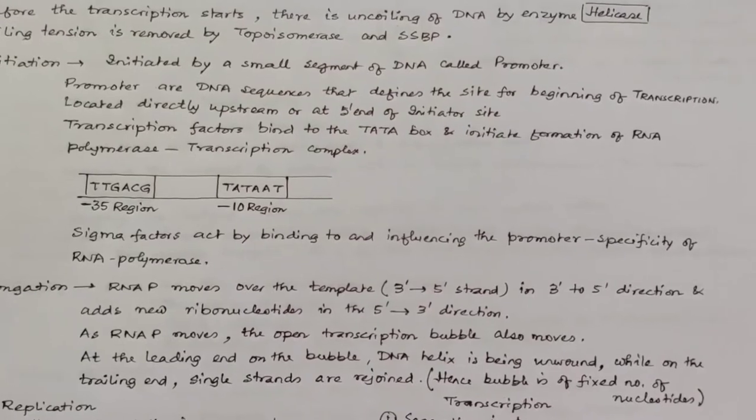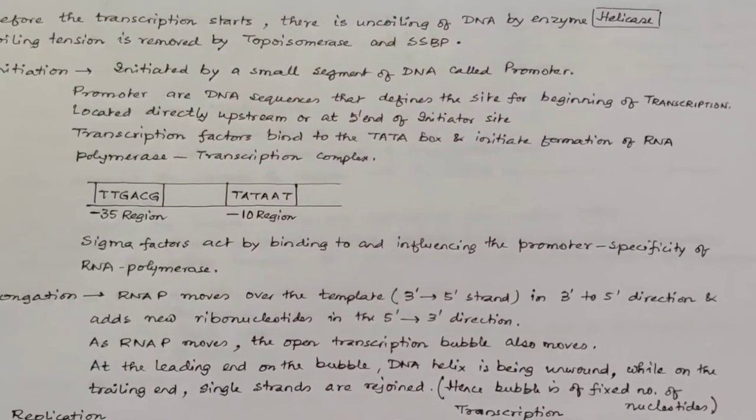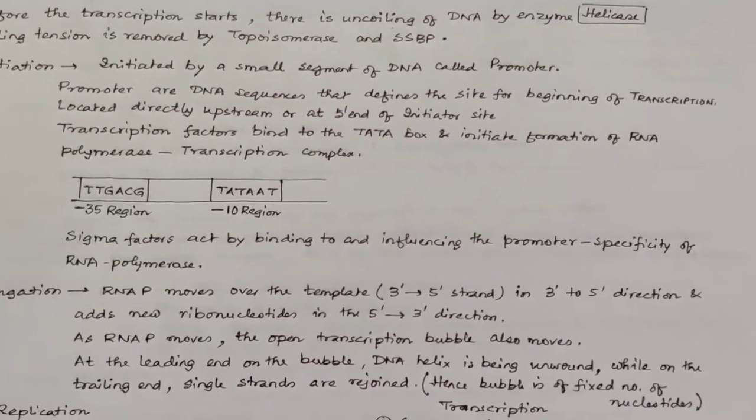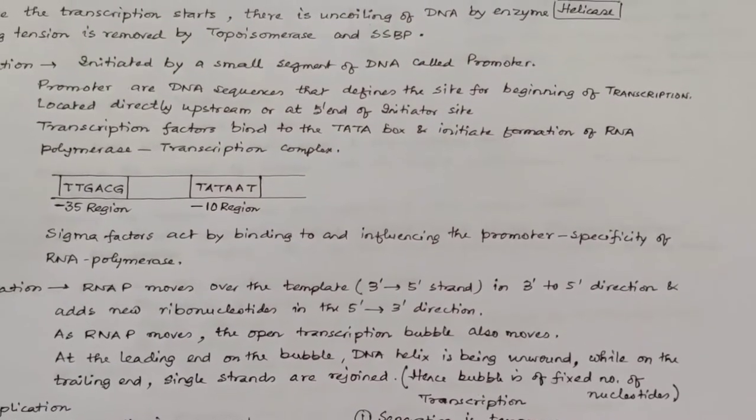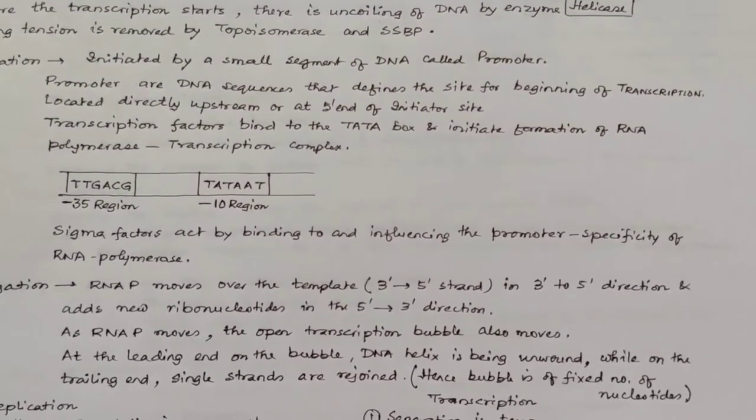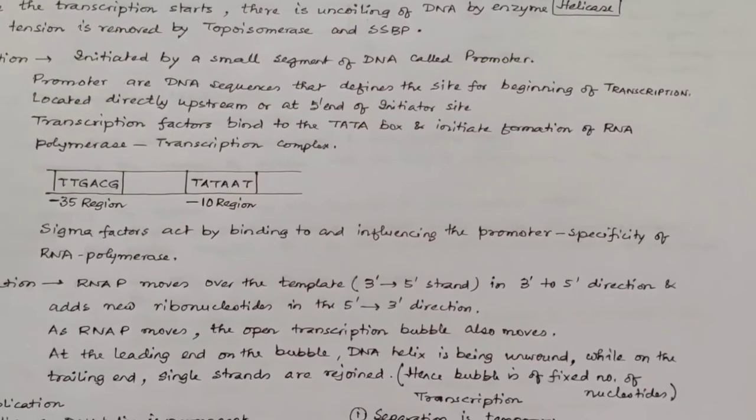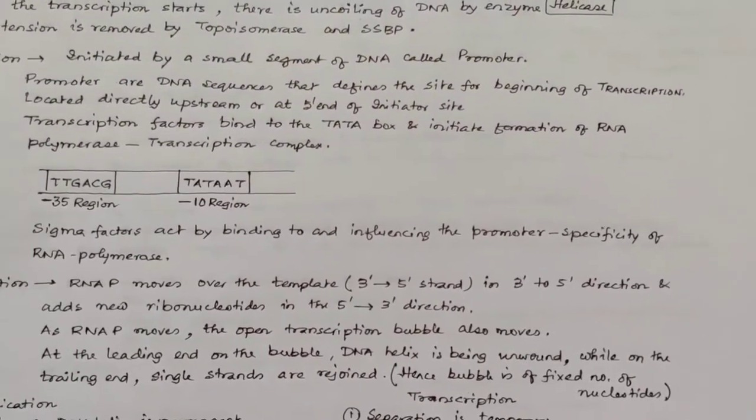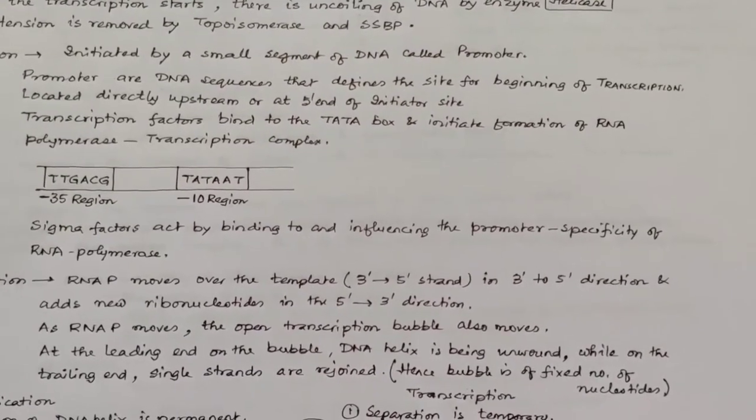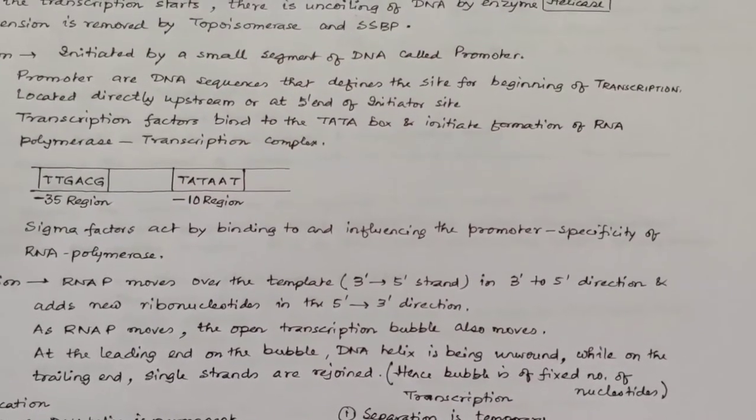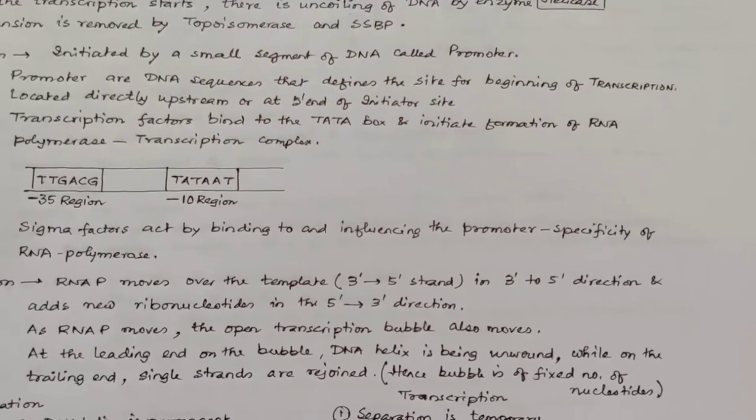As RNA polymerase moves, the open transcription bubble also moves. At the leading end of the bubble, DNA helix is being unwound, while on the trailing end, single strands are rejoined. Hence, the bubble is of a fixed number of nucleotides always.